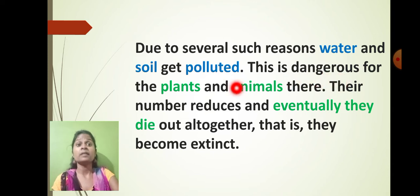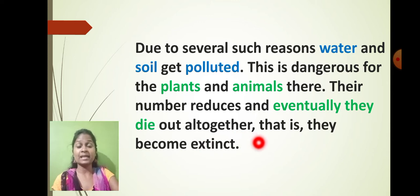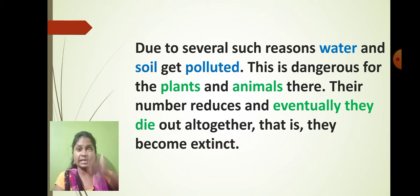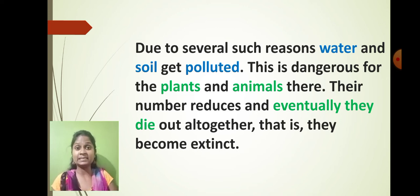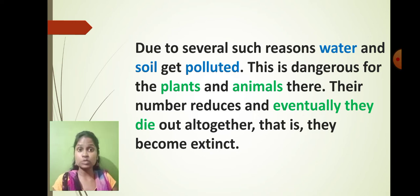Due to several such reasons, water and soil get polluted. This is dangerous for the plants and animals living in that region. Their numbers reduce and eventually they die — that is why they become extinct. Extinct means they are at the stage of getting finished; particular species are dying because of improper environmental conditions.